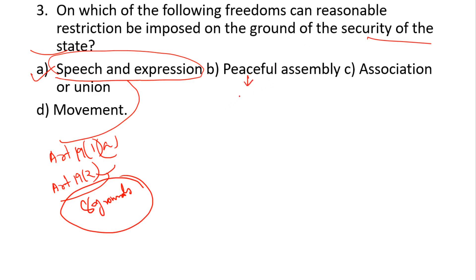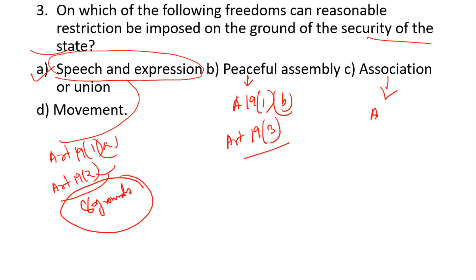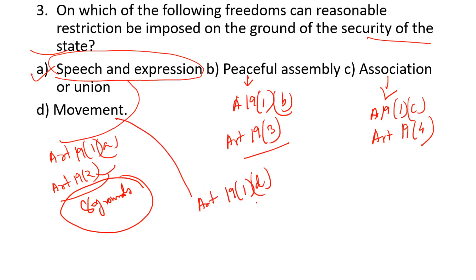Freedom of peaceful assembly is under Article 19(1)(b); restrictions imposed under Article 19(3) — the assembly must be peaceful and unarmed. Freedom of association is under Article 19(1)(c); restrictions under Article 19(4) in the interest of public order, morality, or the sovereignty of India. Freedom of movement is under Article 19(1)(d); restrictions under Article 19(5) in the interest of the general public or for the protection of the interest of any scheduled tribe.